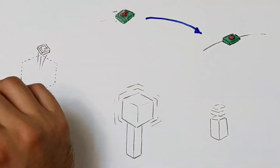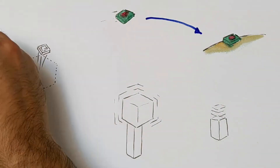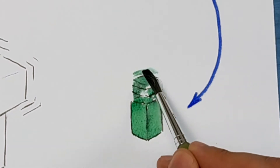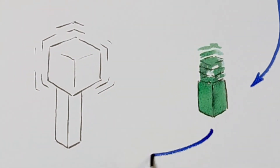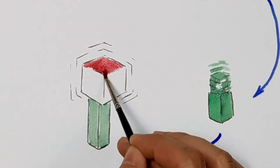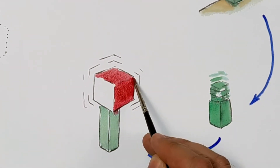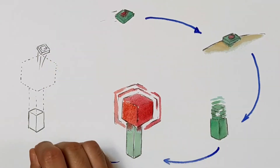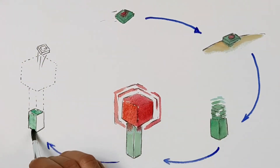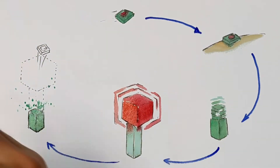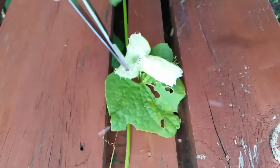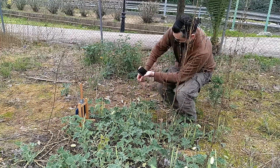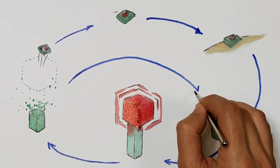A virtual seed falls to the ground and then a plant begins to grow. A colorful flower appears with a new seed inside it and then it explodes. And that is how a new seed is born and the cycle repeats itself.